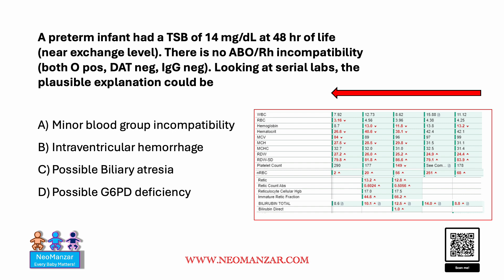Minor blood group incompatibility is not a possibility because the IgG was negative and the blood bank already looked for that. Intraventricular hemorrhage can give you low hemoglobin, but why would it cause such high hyperbilirubinemia at 48 hours? Biliary atresia is out too, because the direct bilirubin is only 1 — in biliary atresia it should be high. So now we are left with possible G6PD, which is possibly the right choice.